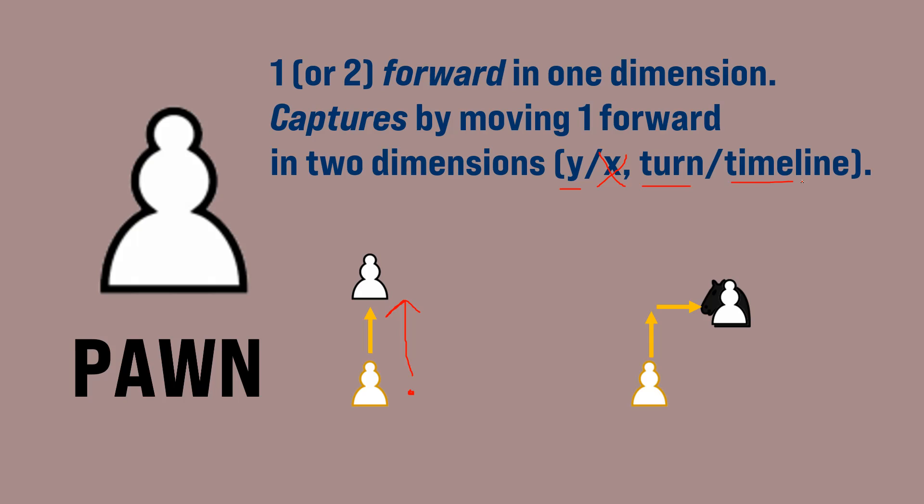A pawn captures another piece by moving one forward in two dimensions. Here it is moving one forward in the Y dimension, and because the X dimension does not have a forwards, it can move either way. Now, in 5D chess, the pawn must move along these dimensional pairs.